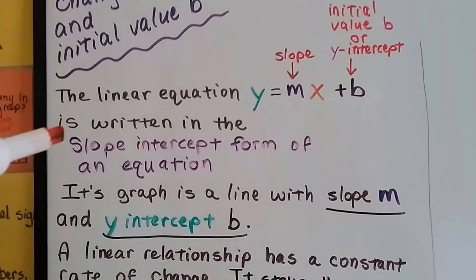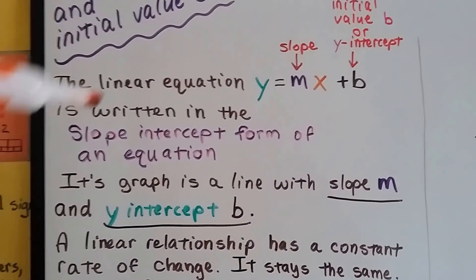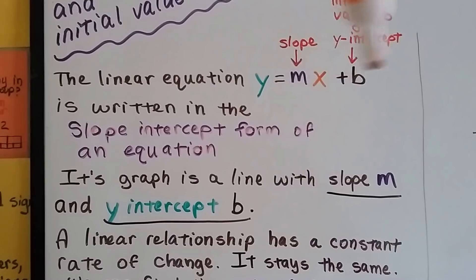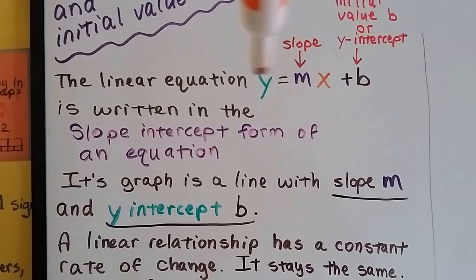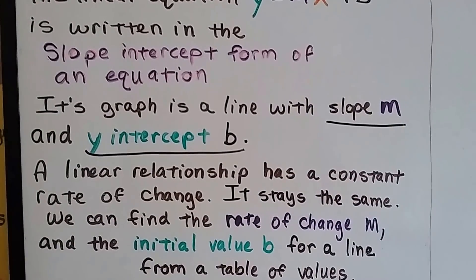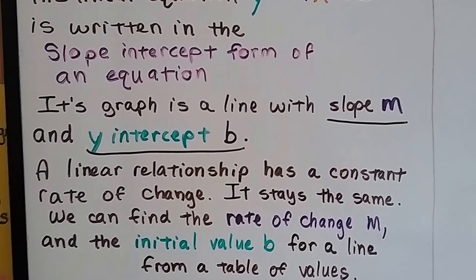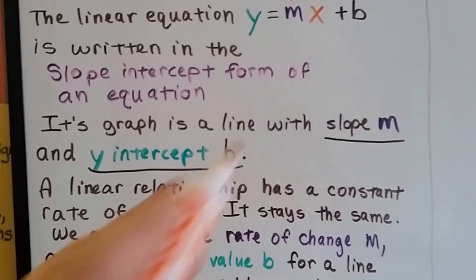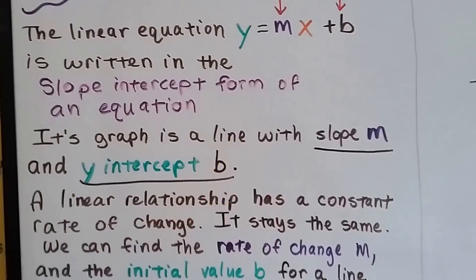So this linear equation is written in slope-intercept form of an equation. It's called the slope-intercept form. Whenever you see this, you know it's slope-intercept form. And its graph is a line with a slope m and a y-intercept b.